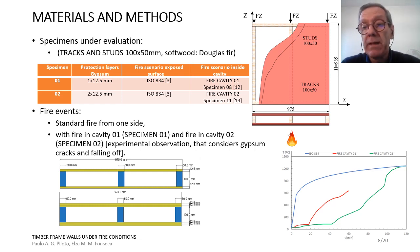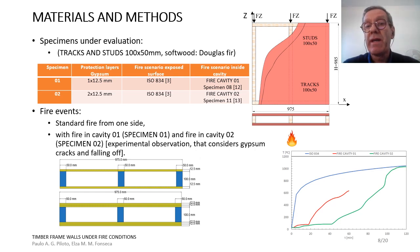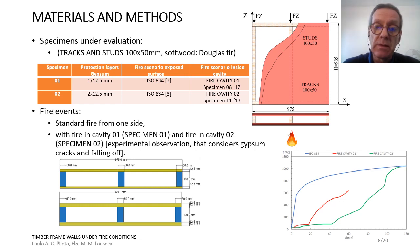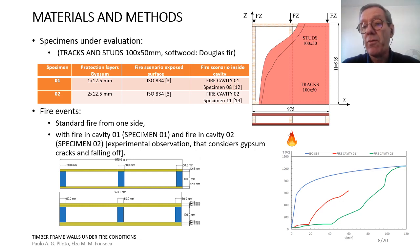Special temperature curves record temperature evolution inside the cavity, which are important for validation of the numerical model. For specimen one, fire cavity curve one is used inside the cavity. For specimen two, fire cavity curve two is used. The blue curve is the standard ISO fire, the red curve is the cavity temperature for specimen one, and the green curve is the cavity temperature for specimen two.